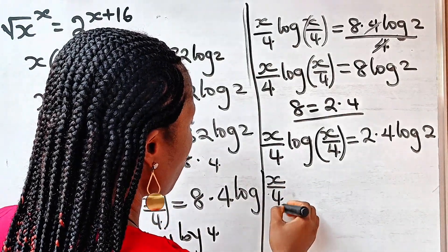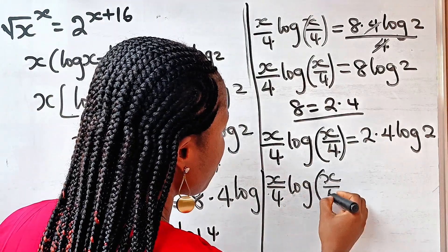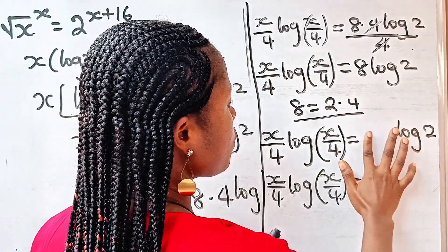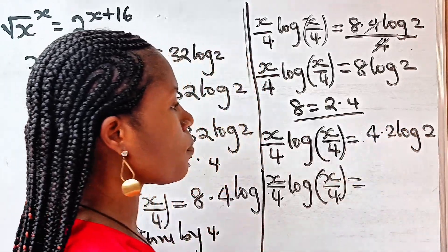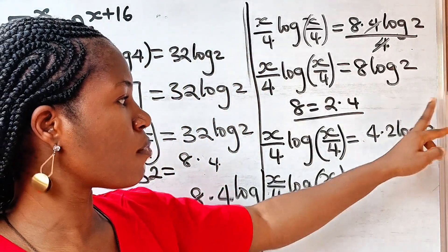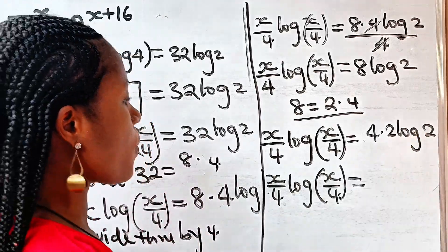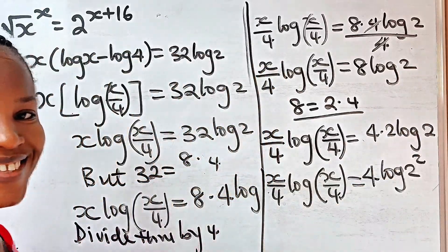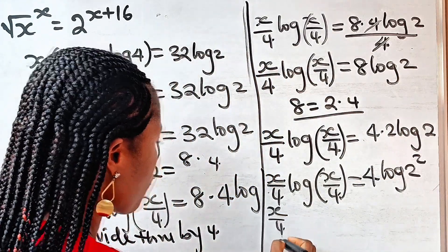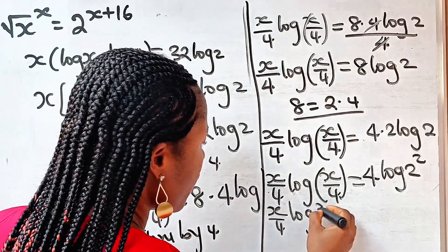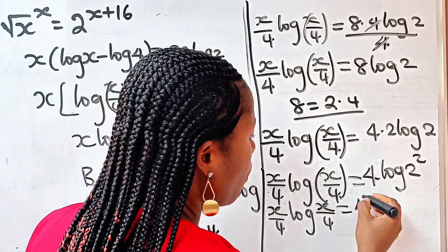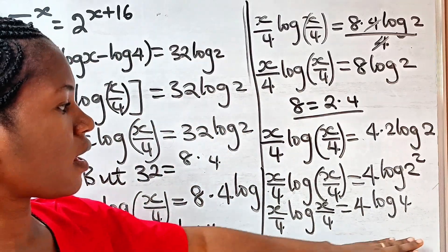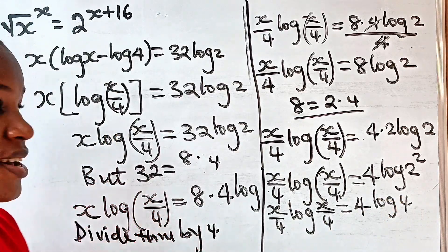Now we have x over 4 log(x over 4) is equal to 8 log 2. I want to get the same form on both sides so I can compare them. The only way to do that is to split 8 as 2 multiplied by 4. So we have x over 4 log(x over 4) is equal to 2 times 4 log 2. Now, remember the law of logarithm — the 2 can become the power of this — so we have 4 log 2 squared, and since 2 squared equals 4, we have 4 log 4. So x over 4 log(x over 4) is equal to 4 log 4.